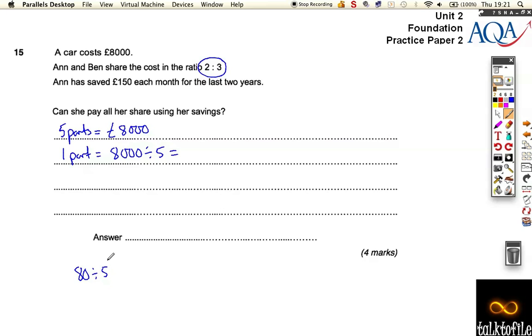5, 10, 15, 20, 25... [counting by 5s up to 80], which is 16. Or, you could think, well, there's two fives in 10, and there's eight tens in 80, so that must be 16. So, we're going to have to put the zeros back in, so it's £1,600.